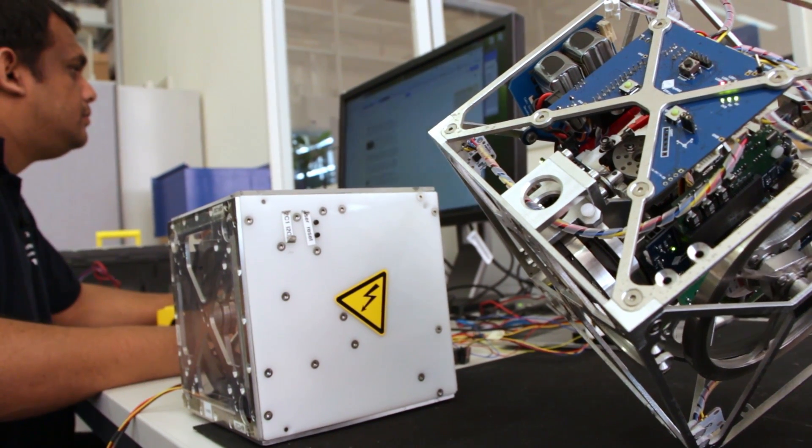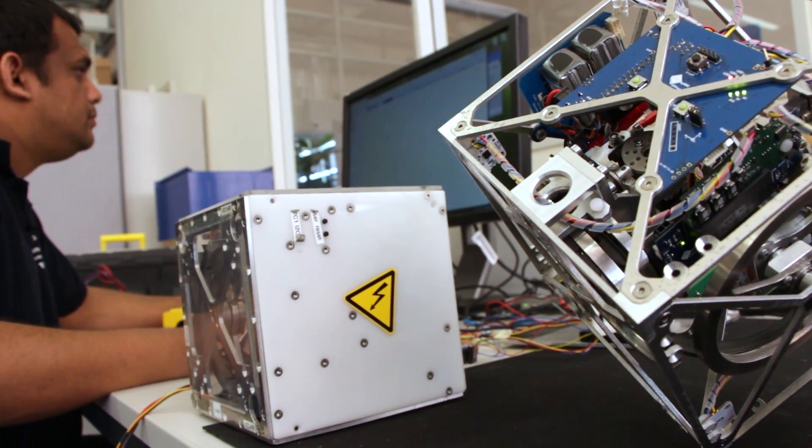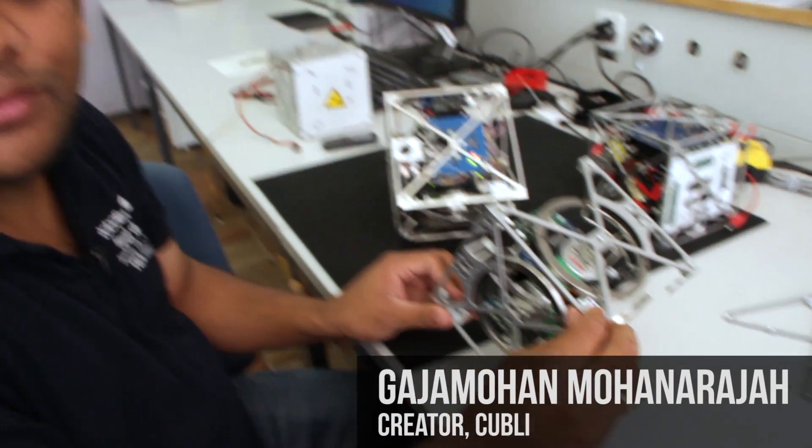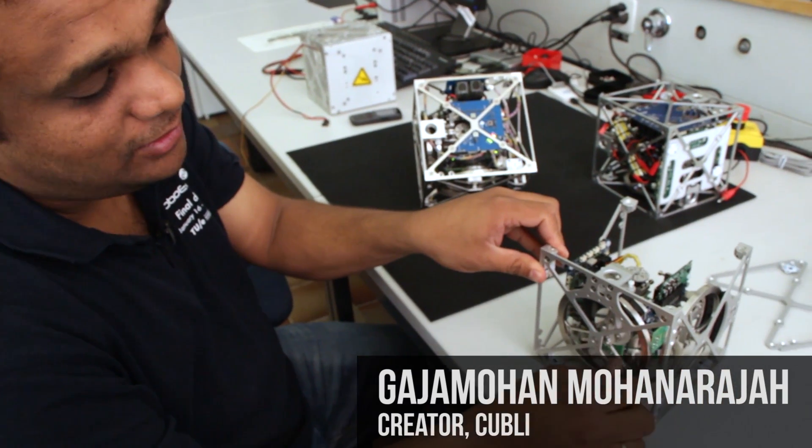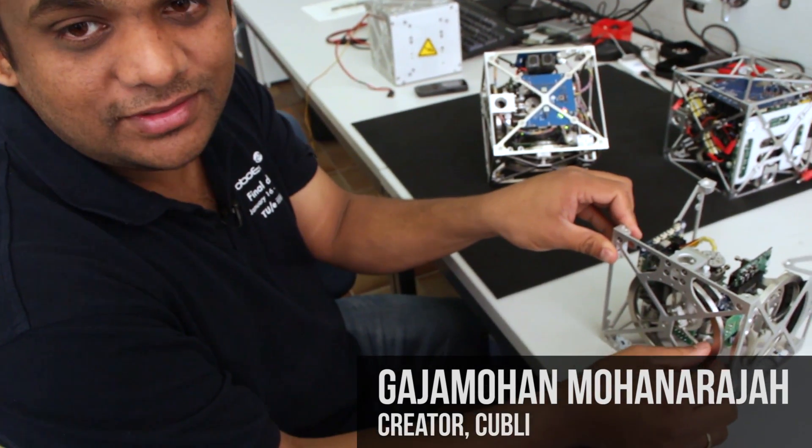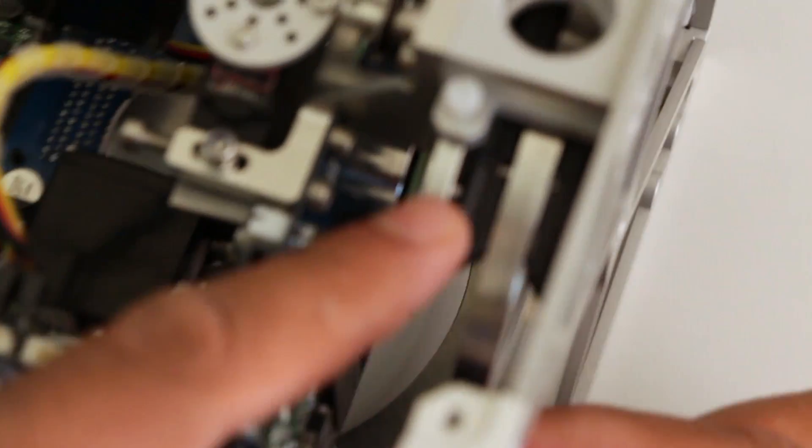This is Gajam, one of Cubely's creators. What if you want to make the Cubely jump all the way? Here the problem is the torque from the motors is not sufficient. Then you see these brakes here—these are typical bicycle brakes.